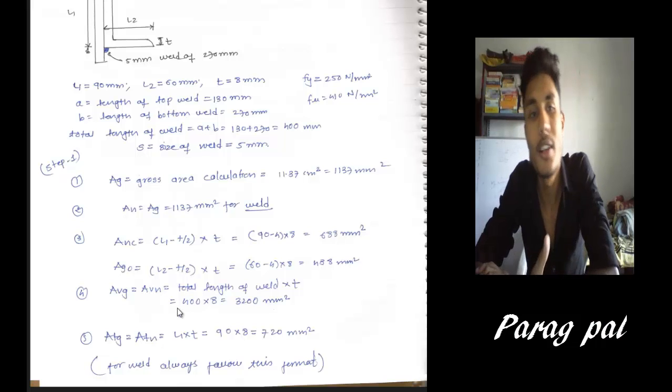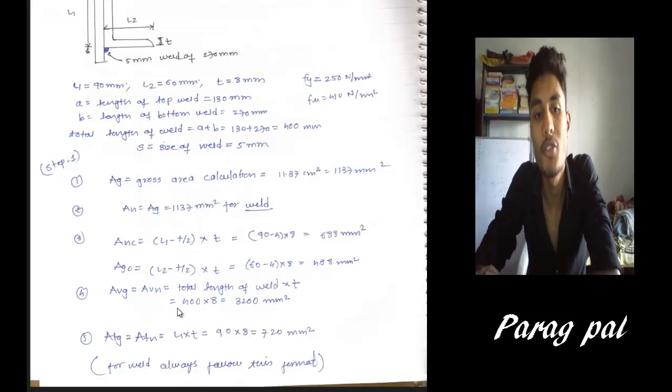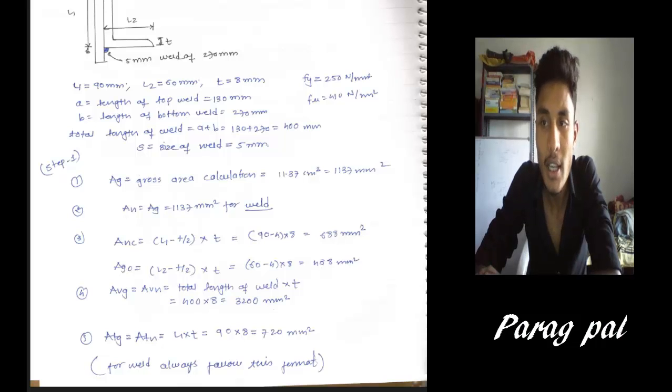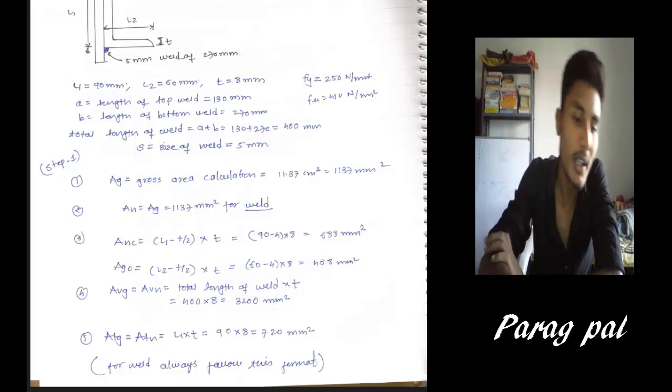Because as you found out in a bolted connection, you have to determine Av, Lvg, Ltg, all these values, but here it's not the problem. But you have to remember, you have to determine the size of weld and total length of weld. Accordingly, you can find out the Anc, Ago, Anc, and also this point: Ag equals to An. So all these values are nearly the same.